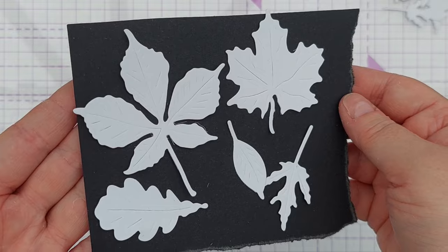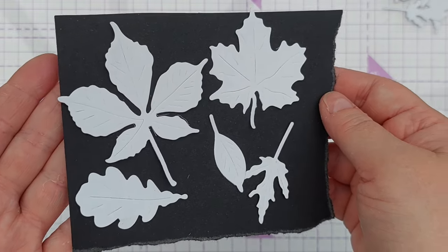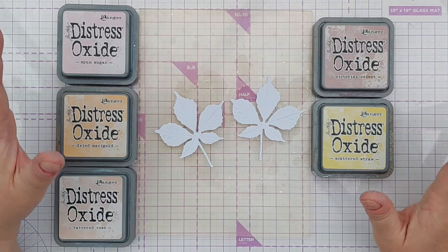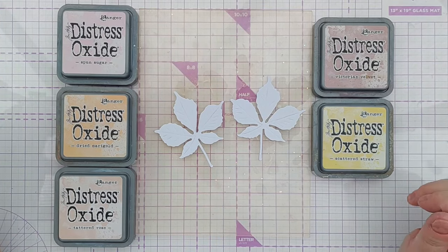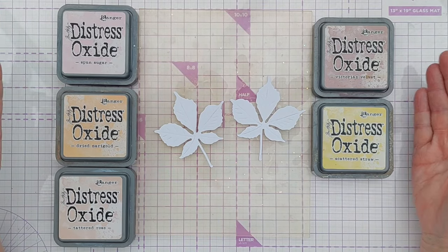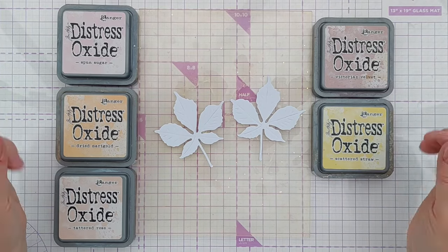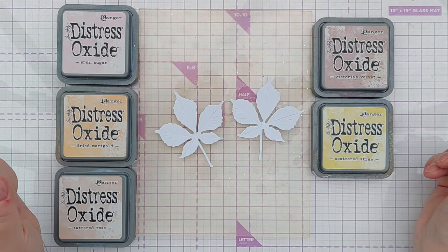So I hope you can see there the veins that have been embossed on the leaves. I've got five different leaves, two of each. I've chosen five distress oxides in a pastel palette, not particularly leafy colors but I'm not worried about that.